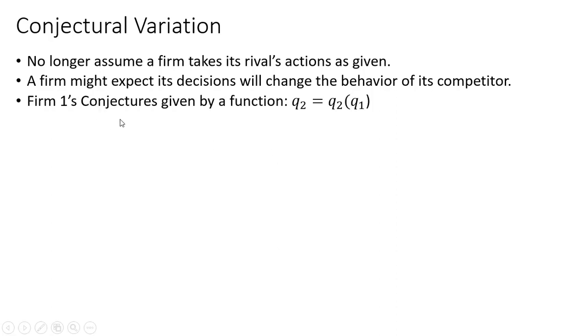Firm 1's conjectures are given by a function. For example, firm 1 might think that if it were to raise output by one unit, the other firm might respond by raising its output by one unit. Or maybe the firm thinks that if it were to reduce its output by one unit, the other firm would increase its output by one unit to make up for the shortfall.